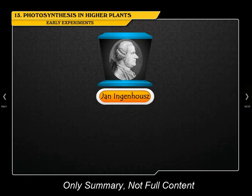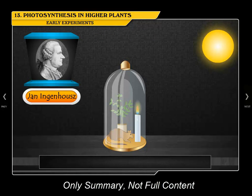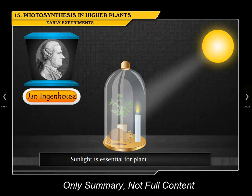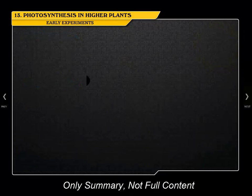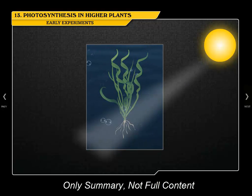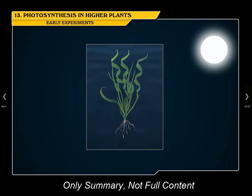Jan Ingenhousz, using the same setup as Priestley, showed that sunlight is essential for plants, and that plants purified air contaminated by burning candles and breathing animals. He also observed that an aquatic plant in bright sunlight formed bubbles of oxygen, which were not formed by the plant in the dark.